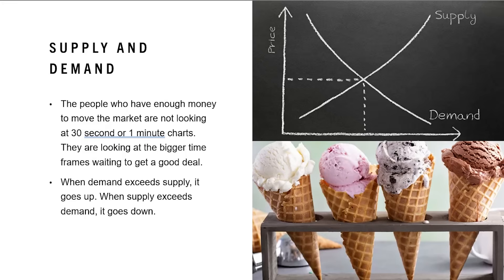So very briefly, let's go over the only part of supply and demand that helps us understand trading. For both buyers and sellers, there are prices that are desirable, and there are prices that are undesirable. There is no need to make it more complicated than that. I stop buying ice cream when it becomes $5 a quart, and I start buying it again when it goes down to $3 a quart. When price gets too high, the big institutional traders who actually move the market start selling, and when it gets low, they buy back in.